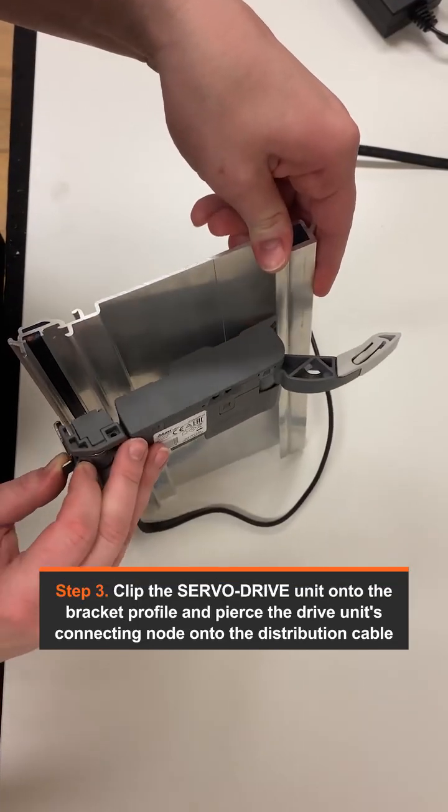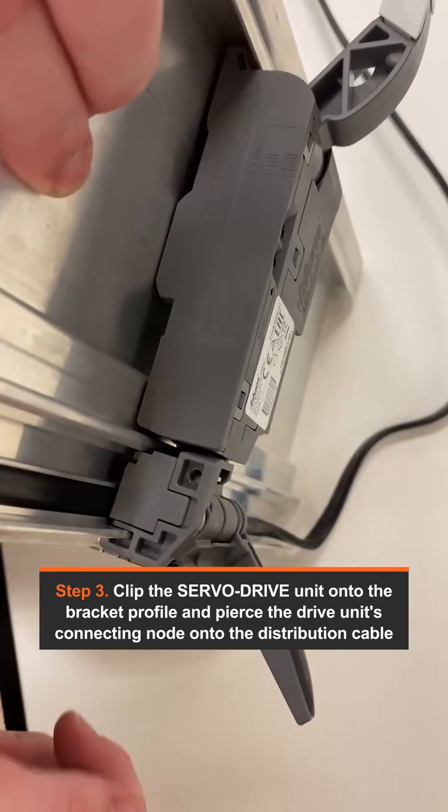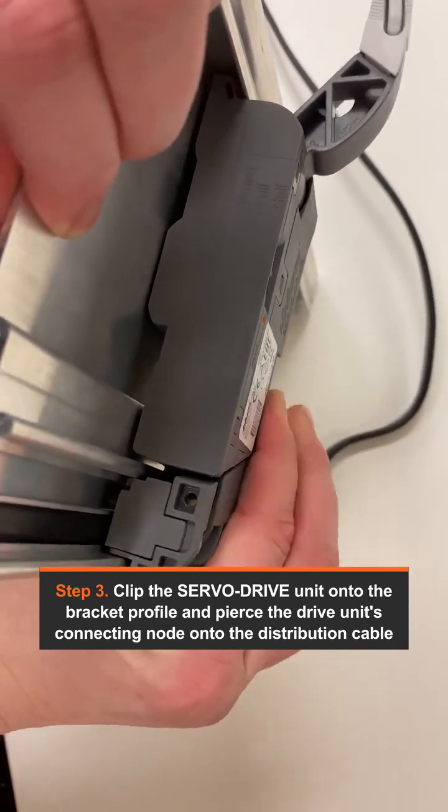Clip the servo drive unit into the bracket profile and pierce the drive unit's connecting node into the distribution cable.